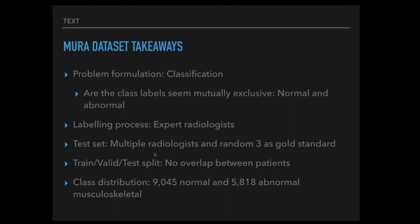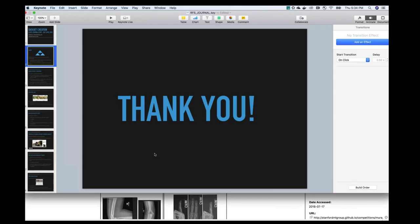Assessing the MURA paper from an industry perspective: it's a binary classification problem — normal and abnormal — which appears mutually exclusive. The labeling process seems solid — actual domain experts labeled the data. The test set is well-designed. There is no data leakage between train/validation/test splits. The class distribution looks good too — roughly balanced between normal and abnormal, avoiding the minority class problem.